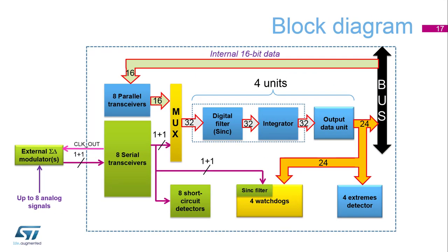The entire filter for Sigma Delta modulators interface consists of 8 serial transceivers, 4 sinc filter parts and integrators, 4 output data units, 4 analog watchdogs, 8 short circuit detectors, 4 extreme detectors, and 8 parallel data input registers.